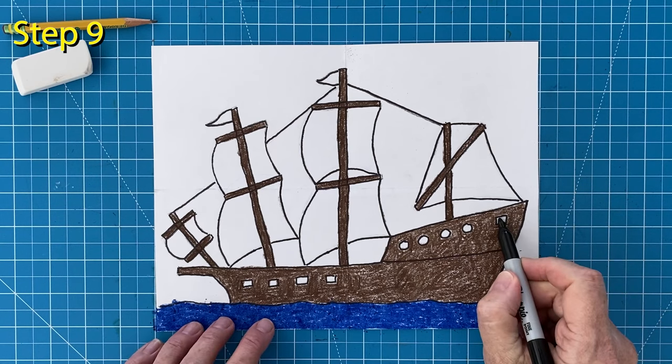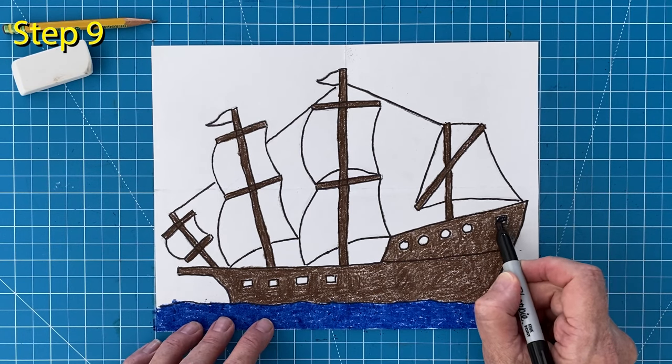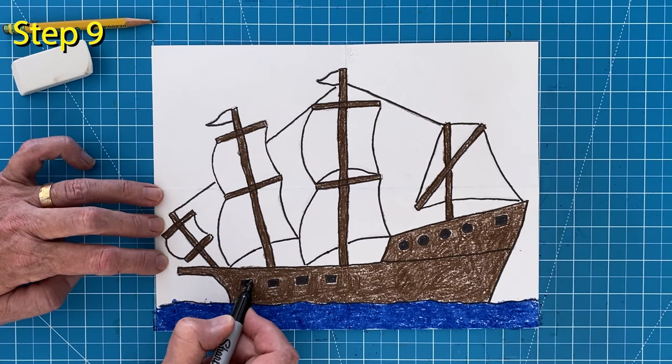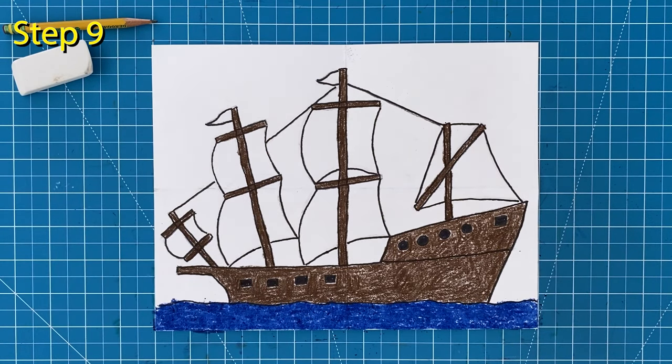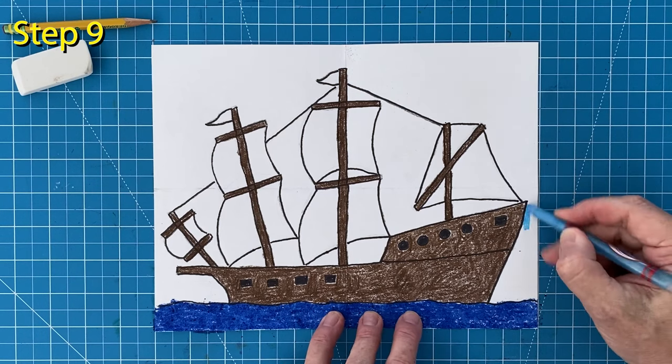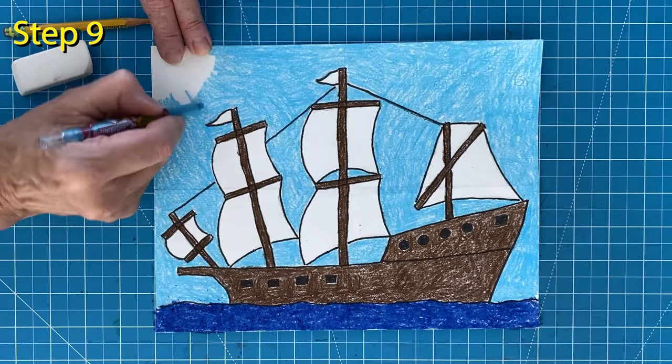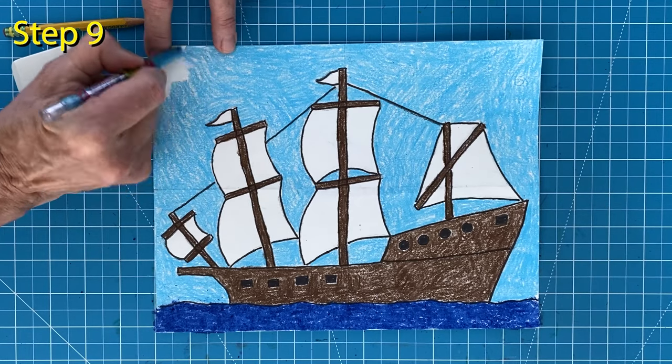Now I believe my black marker will be the best tool to color in those small windows. I think that will make them even darker than if I just used a black crayon. Then comes the careful coloring of the sky. Do try to keep those sails nice and white while you color around them.